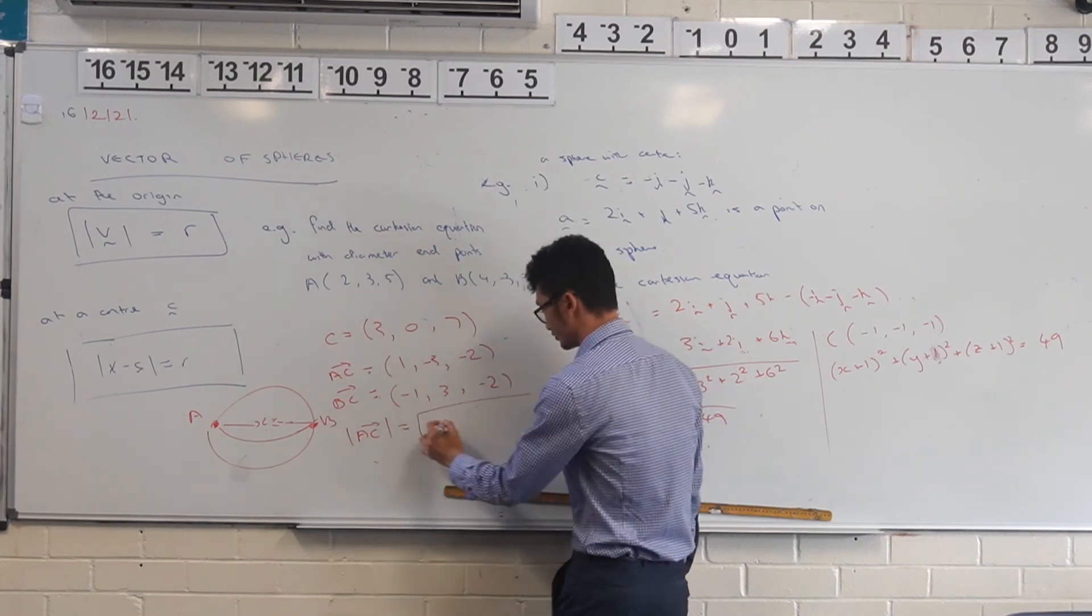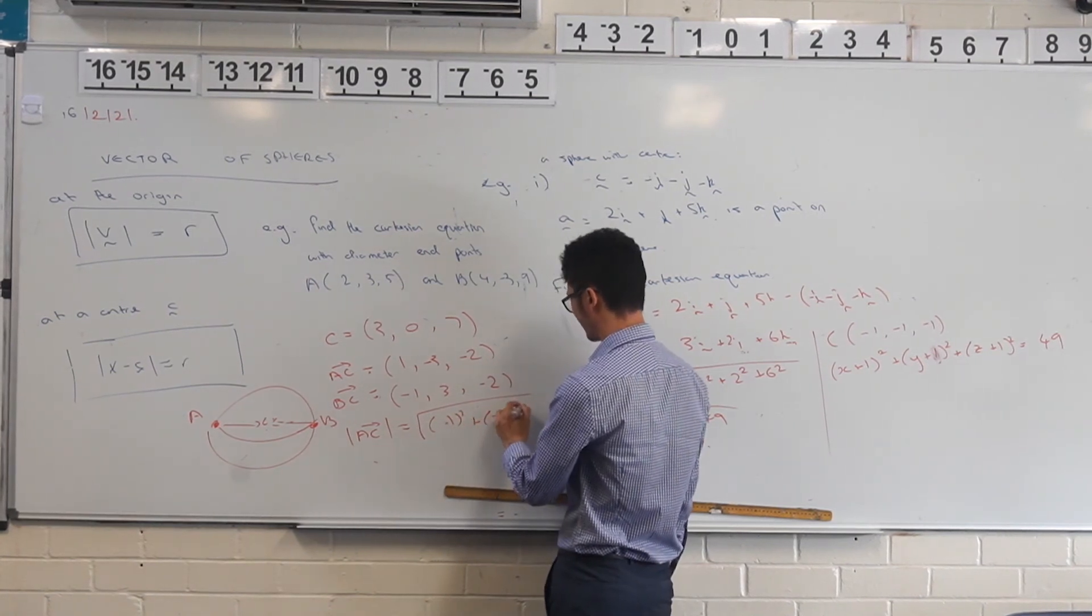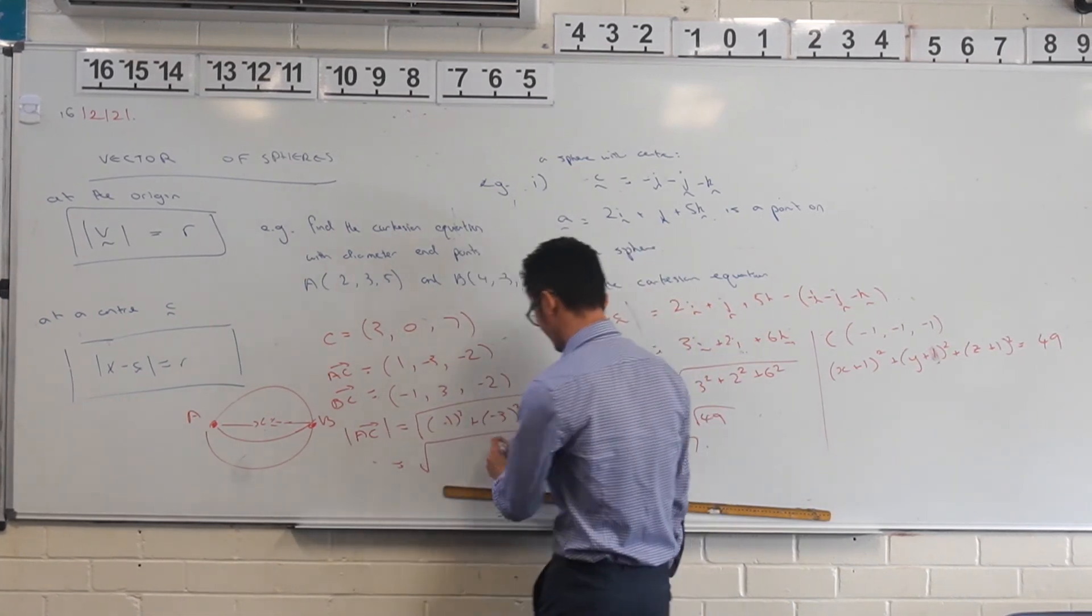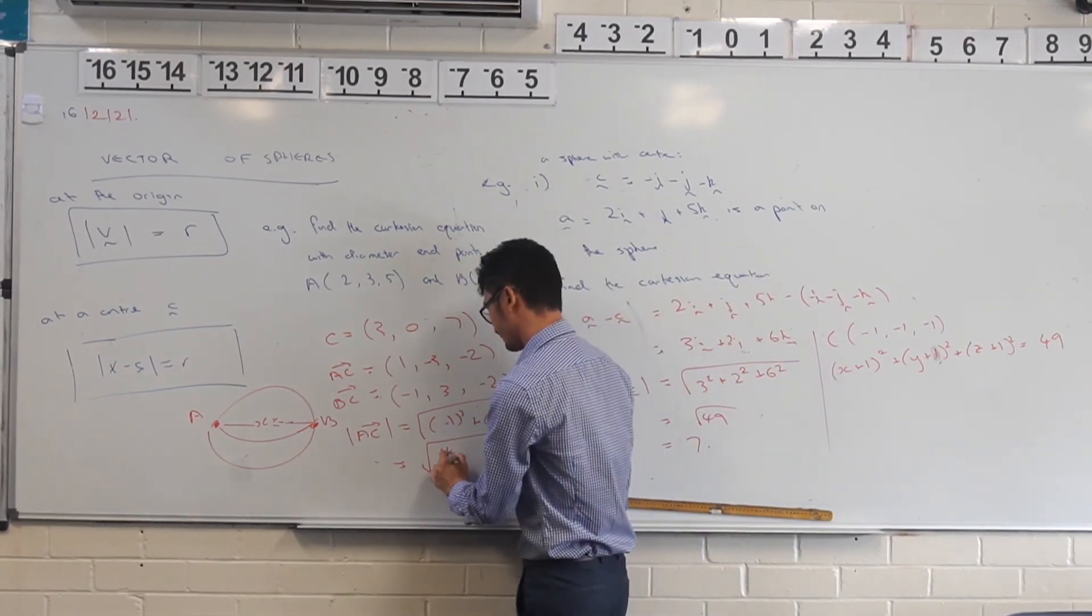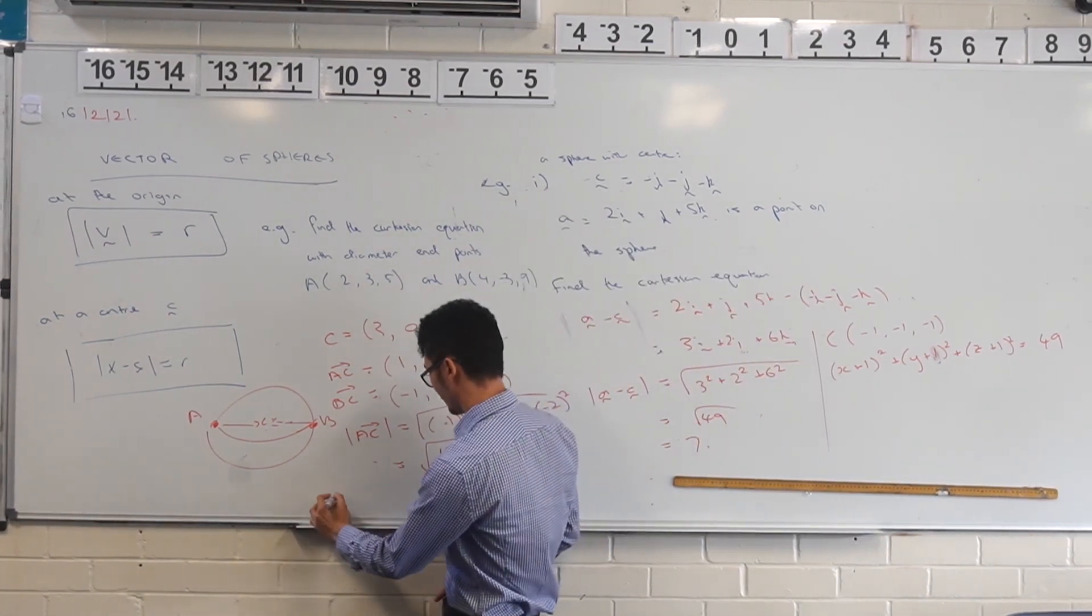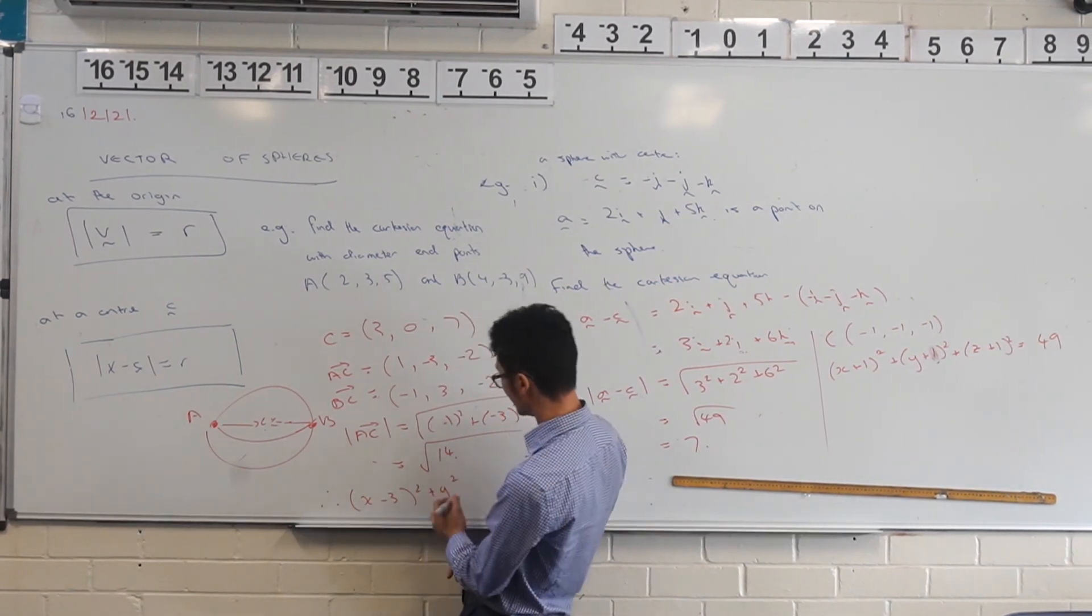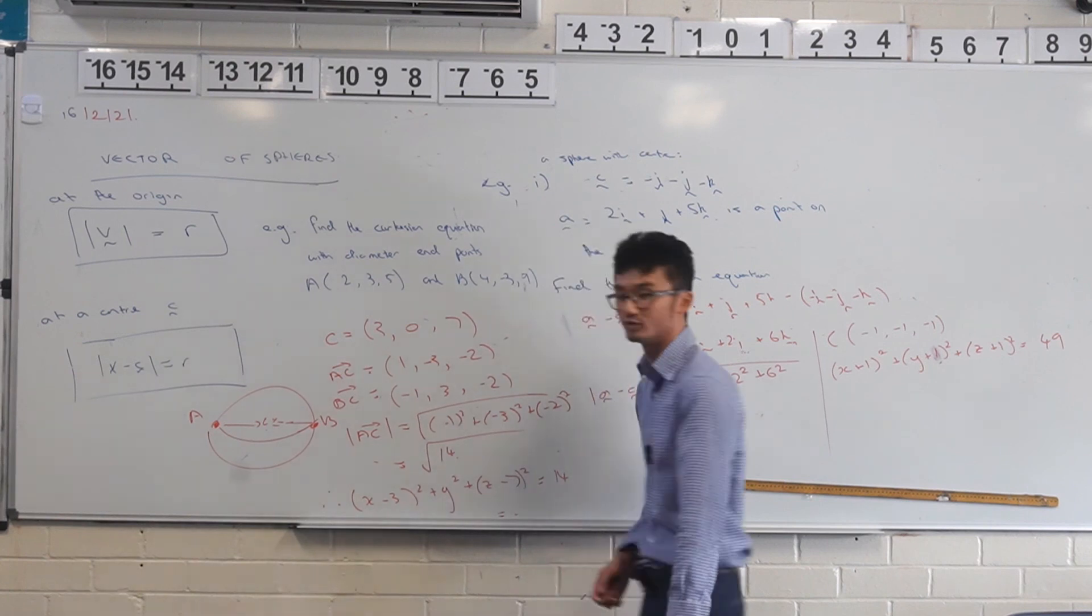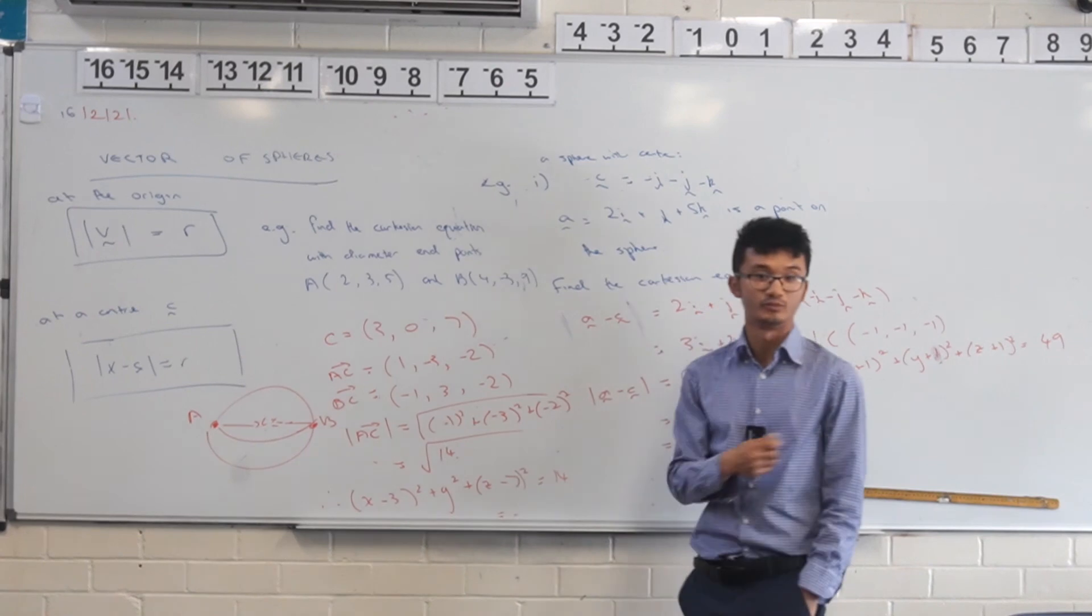And so we'll take the square root of, which I'm using AC, so it's 1 squared plus negative 3 all squared plus negative 2 all squared. And once I do that, then I'm going to get, this is 1 + 9 + 4, square root of 14 I think. And so my Cartesian equation then is going to be, taking my center here, I've got x - 3 all squared plus y - 0 all squared which is y squared, plus z - 7 all squared is equal to 14 when I square that as well. So that's how we can find the Cartesian equation when given the diameter endpoints of a sphere as well.